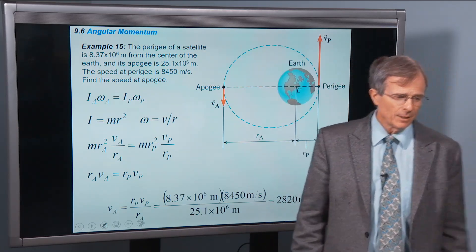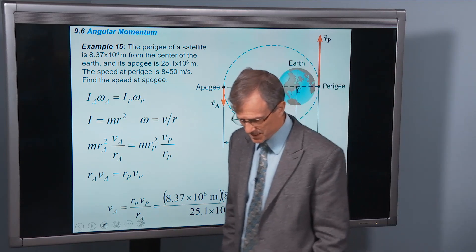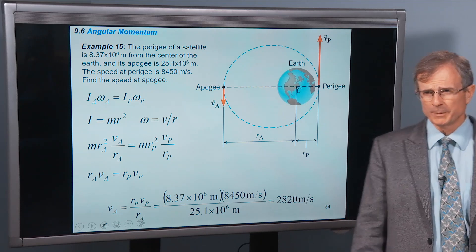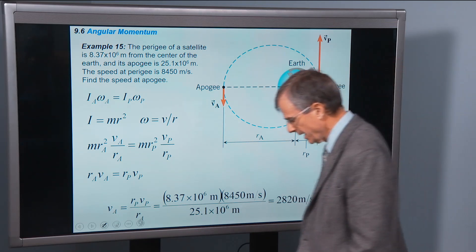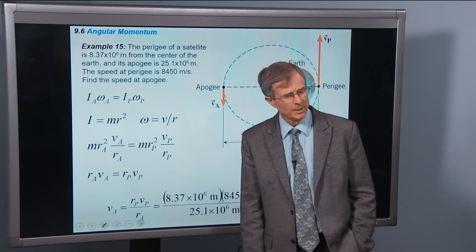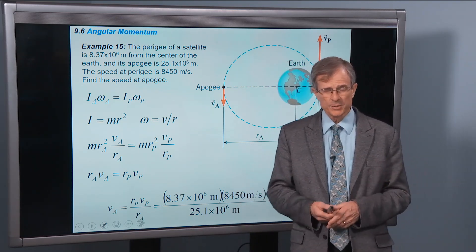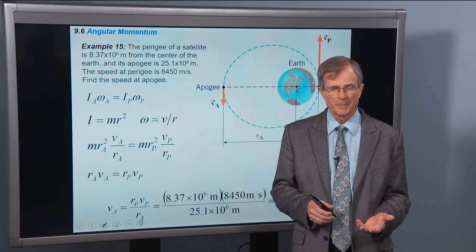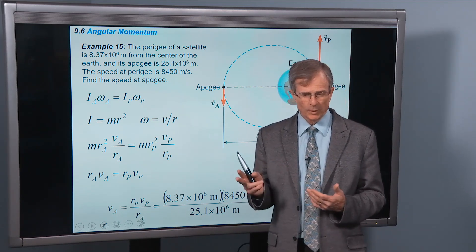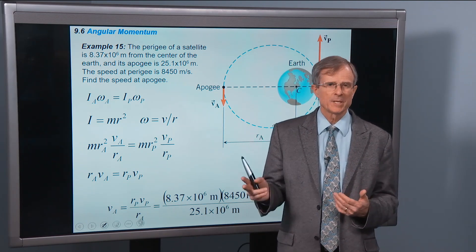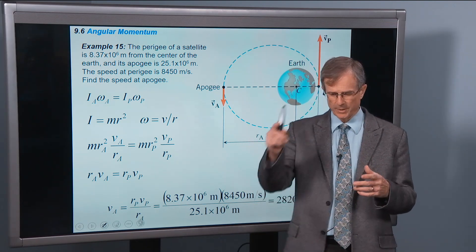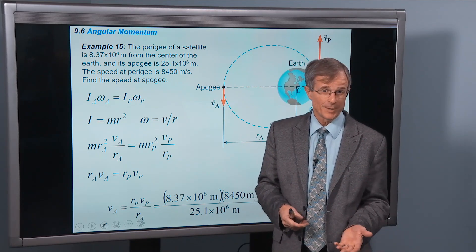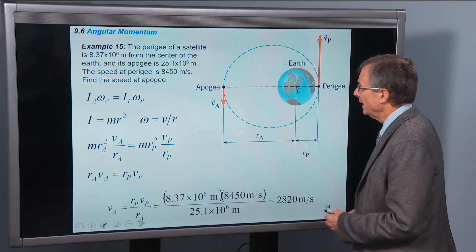The angular momentum of planets orbiting around the sun, of the moon orbiting around the earth, and of satellites orbiting around the earth, the angular momentum of all those systems is conserved. And so you can use conservation of angular momentum to find, if you know what the speed of an orbit is at a certain radius, and if the orbit isn't circular, you can figure out the speed of the orbit at other points in the radius. It's pretty fun. And this is an example of that.